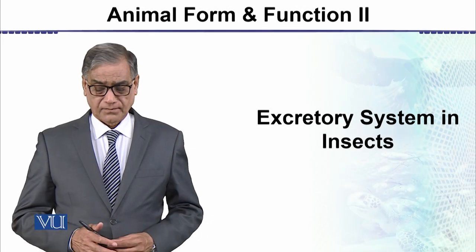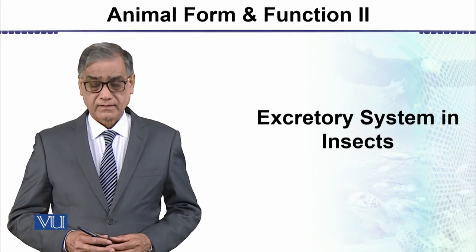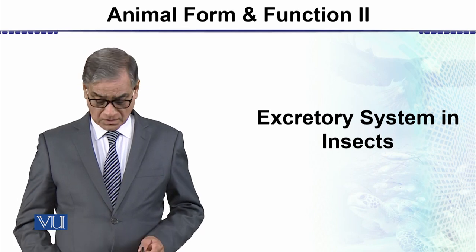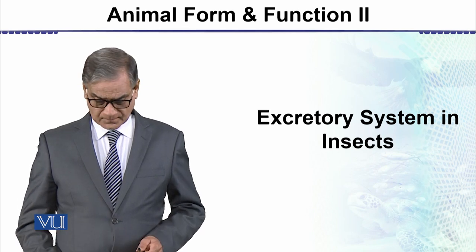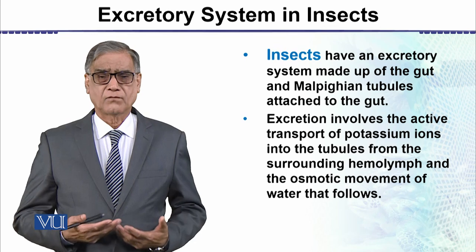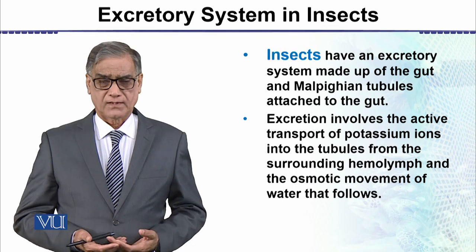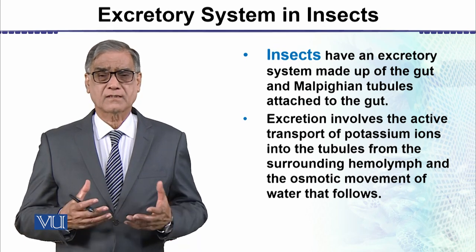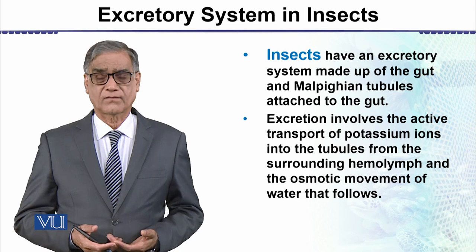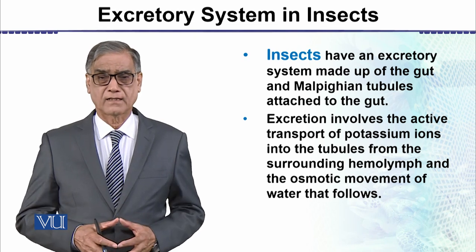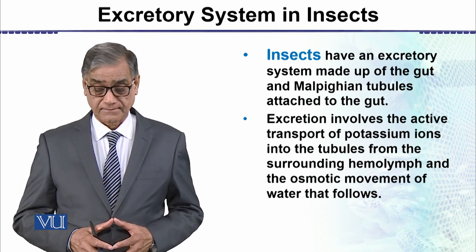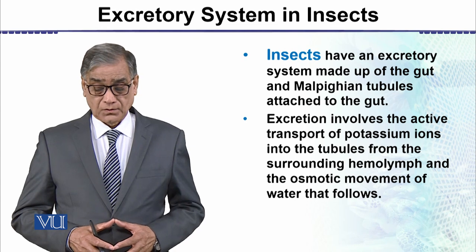Our next topic is the excretory system in insects. What are insects? These are the arthropods which have six legs — there are three pairs of legs. We call them insects or six-legged animals.